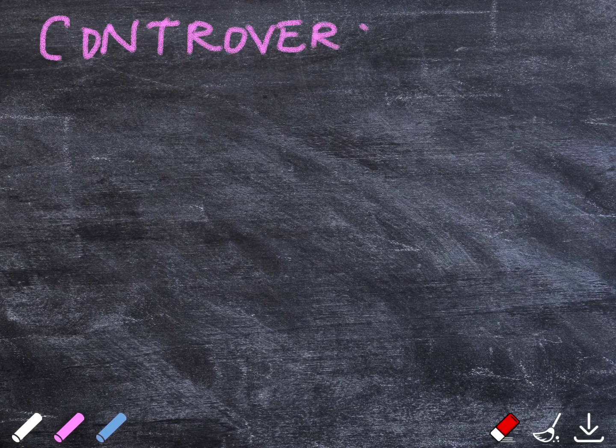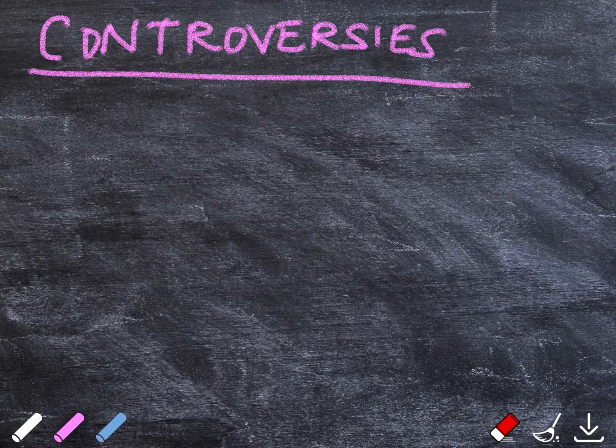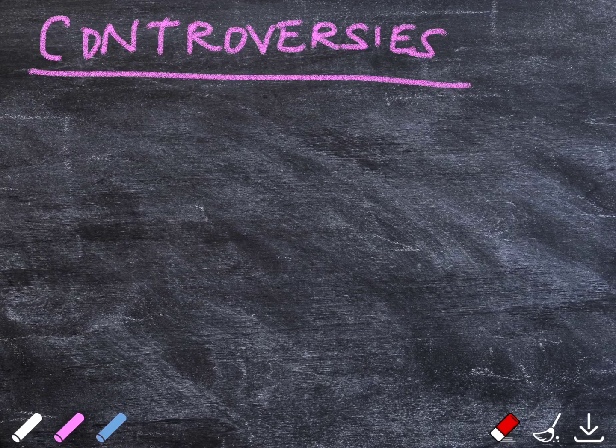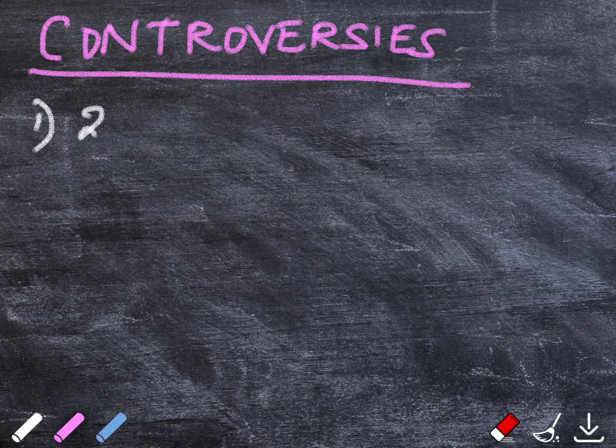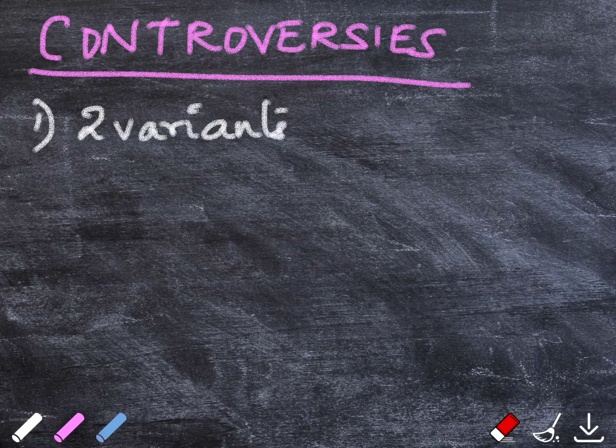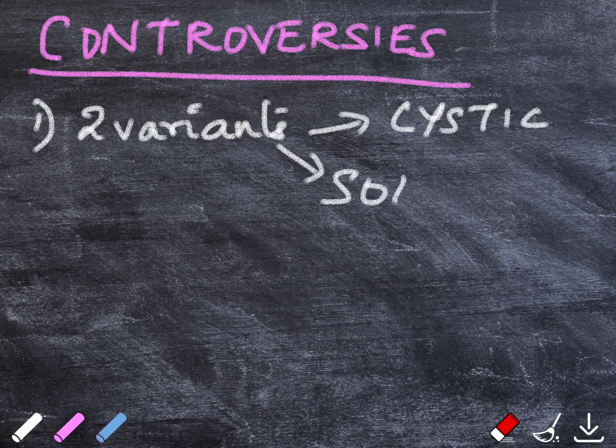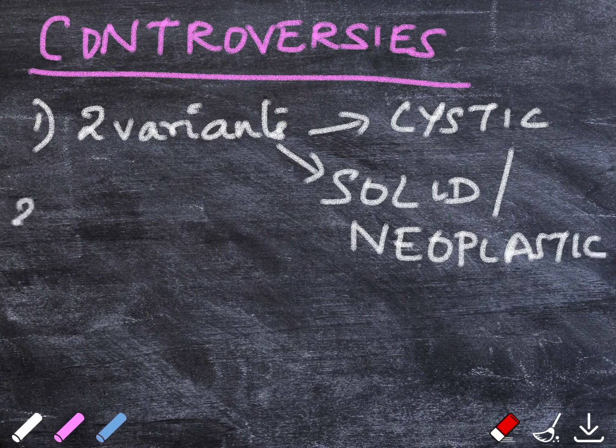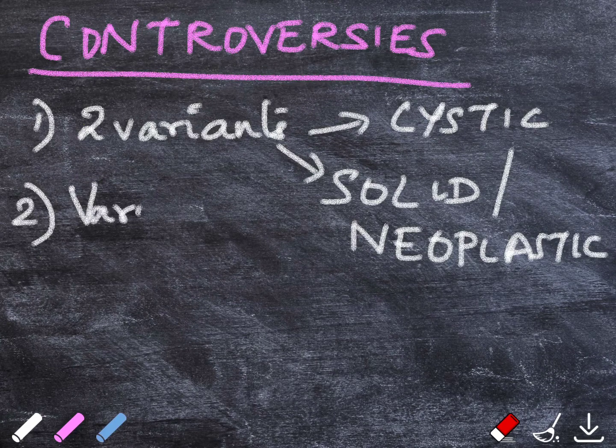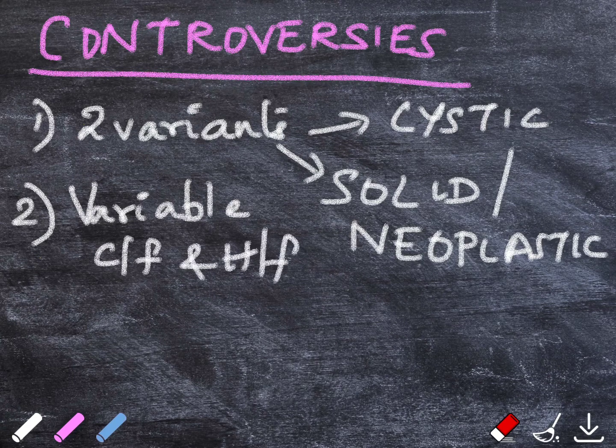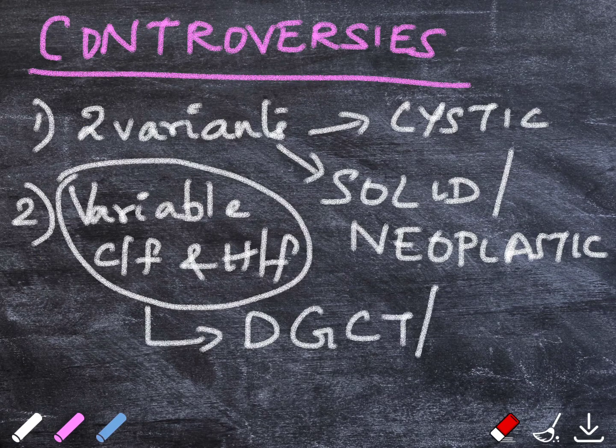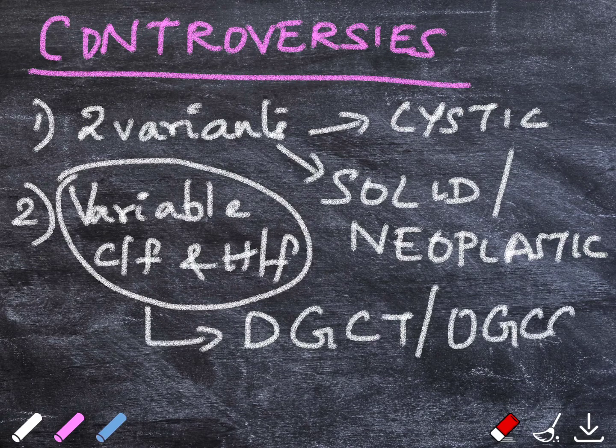This particular entity was surrounded by lots of controversies, especially those concerning its pathogenesis as well as histopathological variations. Four factors were considered. First was the existence of two variants: a cystic variant and a solid or neoplastic variant. Second was that it had variable clinical as well as histopathological features. Though it was considered as a cyst, it greatly resembled a dentinogenic ghost cell tumor or an odontogenic ghost cell carcinoma.